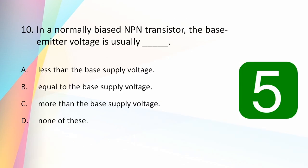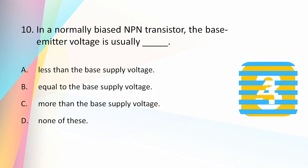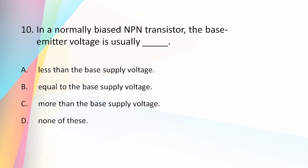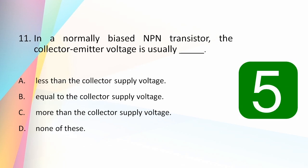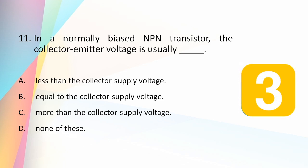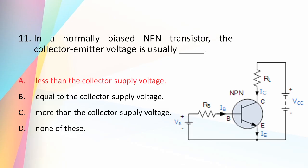In a normally biased NPN transistor, the base-emitter voltage is usually: less than the base supply voltage, equal to the base supply voltage, more than the base supply voltage, or none of these? The answer is less than the base supply voltage. There is a voltage drop across the collector resistance drawn from the collector supply voltage, so the collector-emitter voltage is always less than the collector supply voltage.